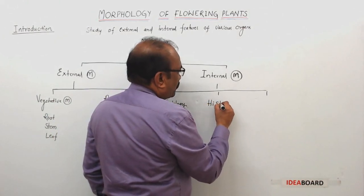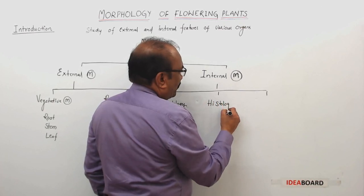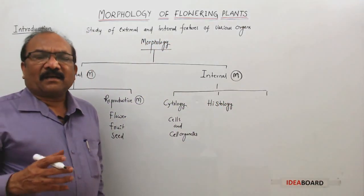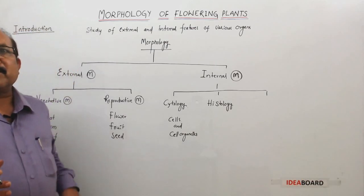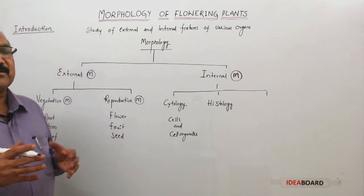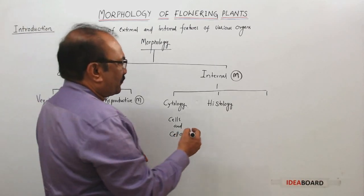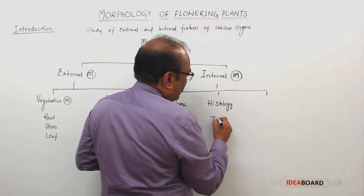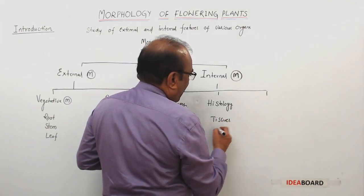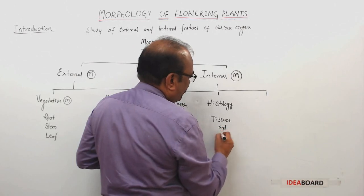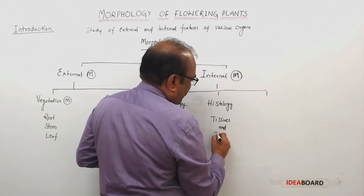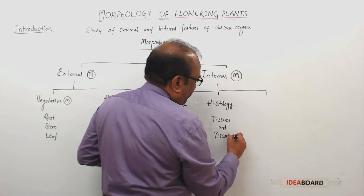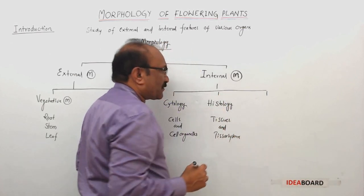As plants are all multicellular, you will find groups of cells. A group of cells is called tissue. So, the study of tissues and tissue systems is called histology.